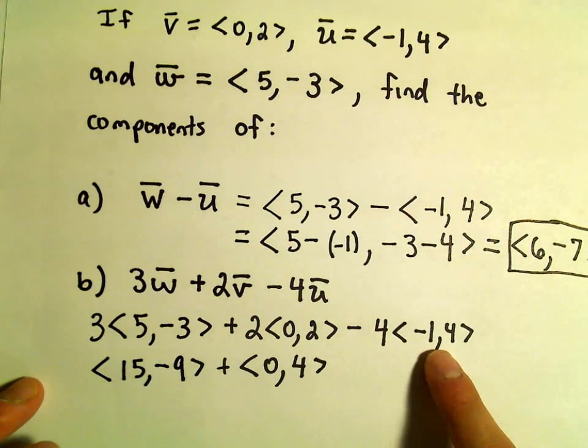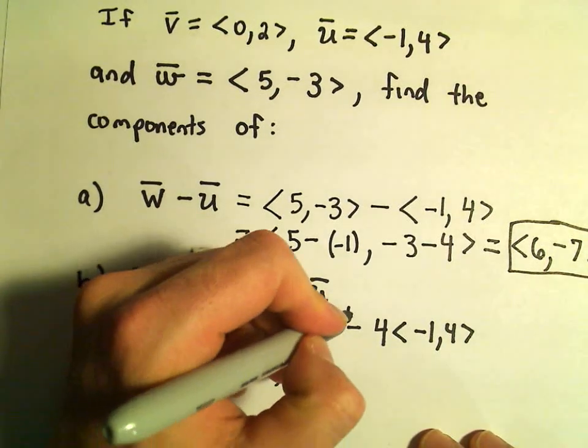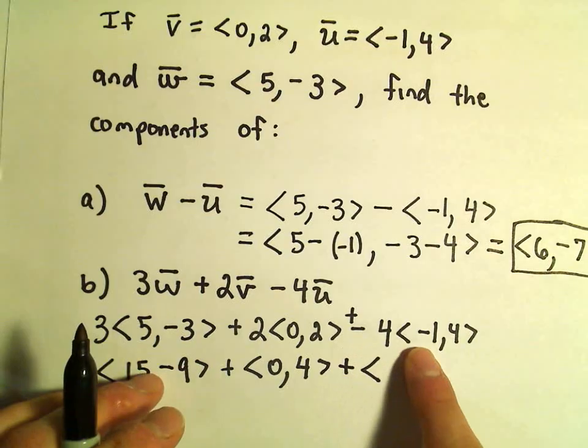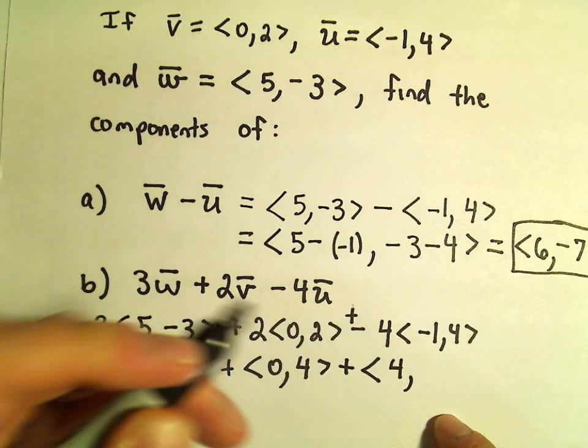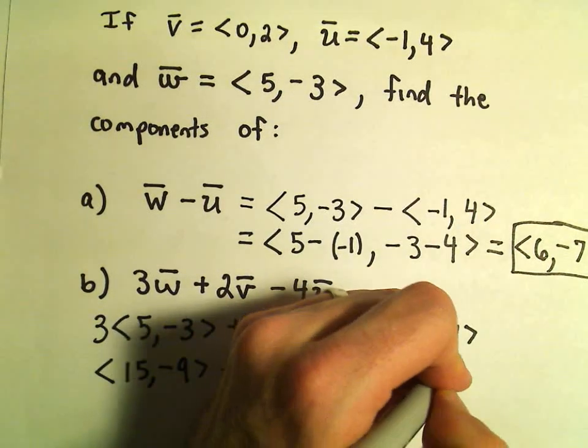If you want to, you can imagine distributing the negative 4. So you could always think about this as being plus negative 4. So if we distribute that negative 4, negative 4 times negative 1 will be positive 4. Negative 4 times 4 will be negative 16.